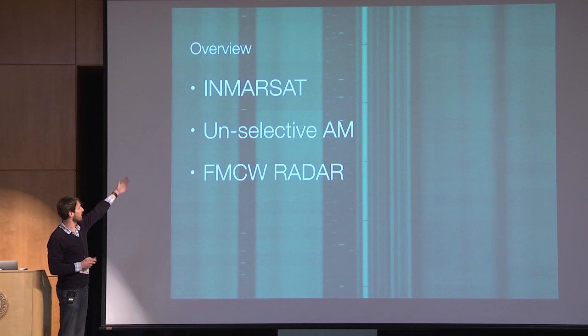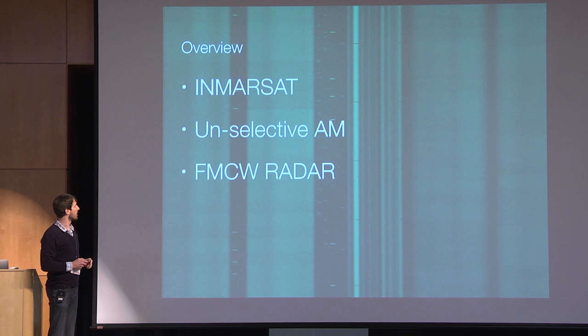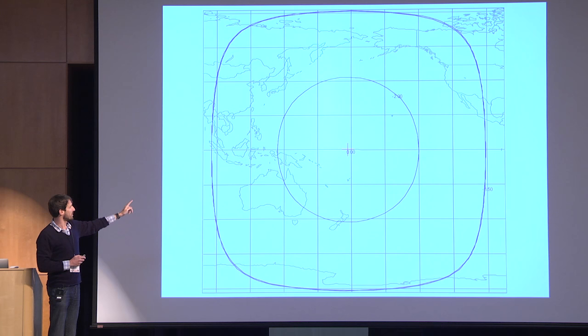I'm going to talk about InMarsat — the satellite constellation — an unselective AM receiver, and all sorts of cool things you can do with FMCW radar. Of course, everything uses GNU Radio, with some gratuitous transmissions.